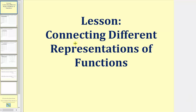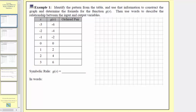Welcome to the first lesson on connecting different representations of functions. In the first example, we're asked to identify the pattern from the table, use that information to construct the graph, and determine the formula for the function g of x. Then use words to describe the relationship between the input and output variables.